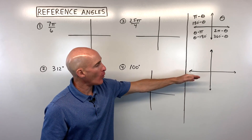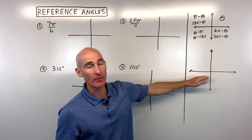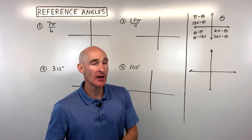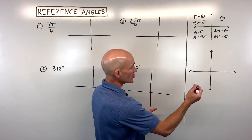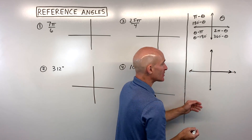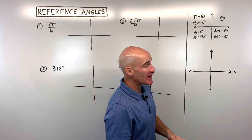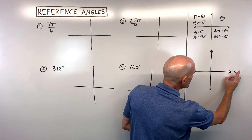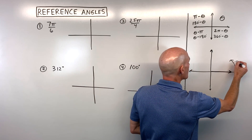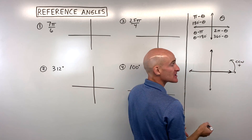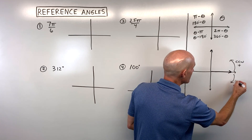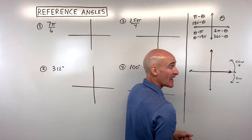First of all, what exactly is a reference angle? Well, you probably learned how to draw angles in standard position. What you do is you start by drawing your initial ray — this is where it initiates or starts. It's like a spinner. If you spin it counterclockwise, we say that's a positive angle. If you spin it clockwise, we say that's a negative angle.